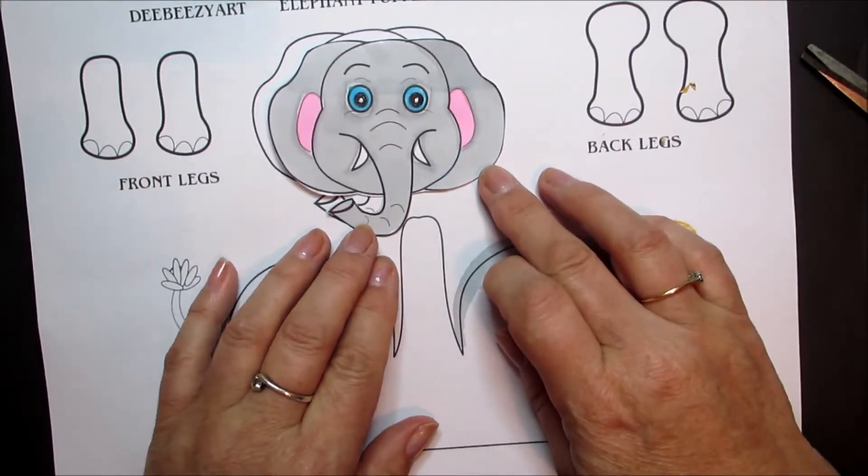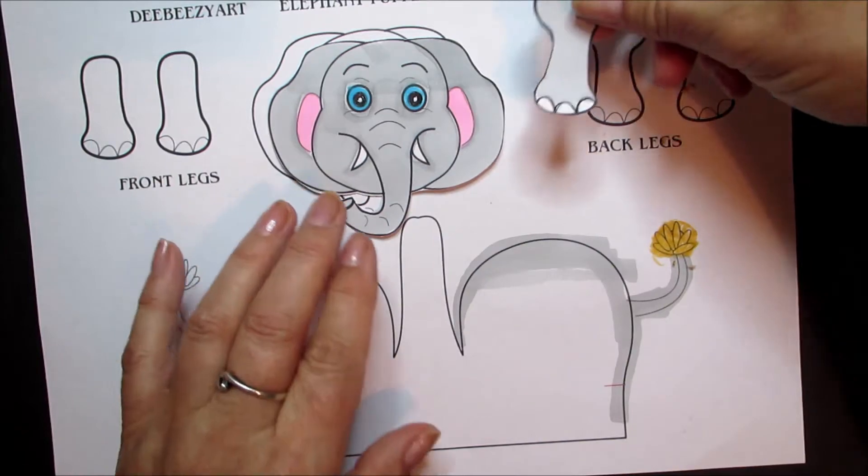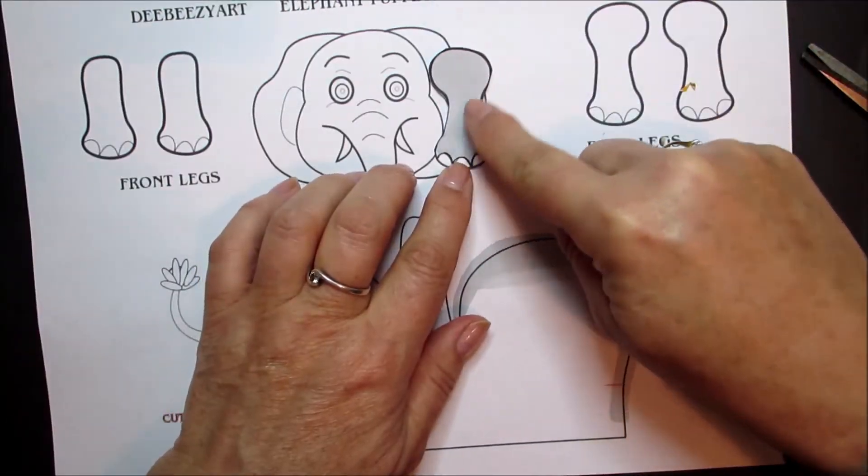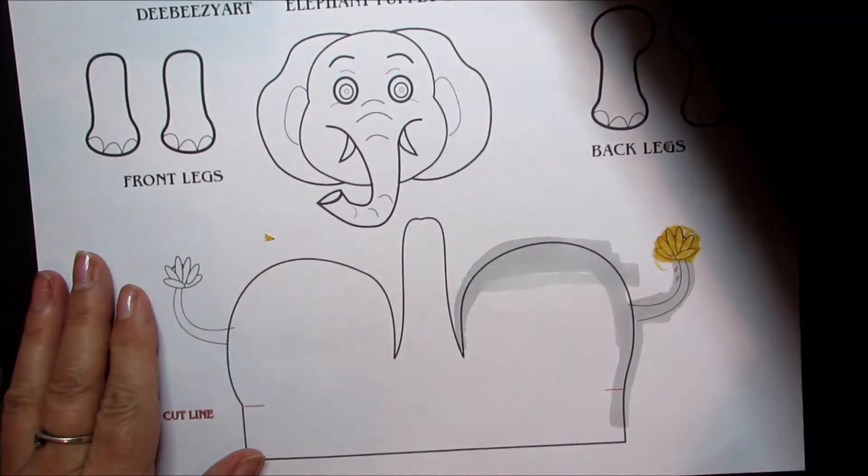That's very important for when we curve our body. For the face I've colored in like this, pink in the ears, blue eyes, left the tusk white. For the legs I've left the little nails at the bottom white.